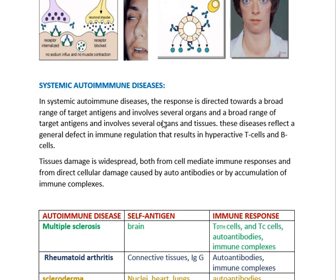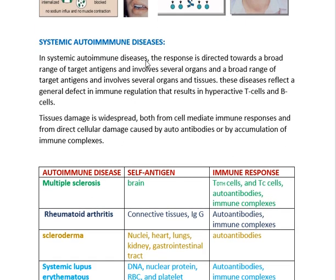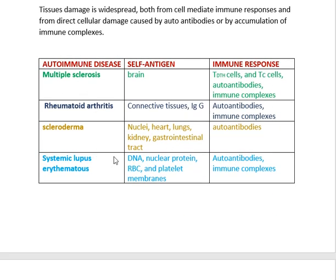Moving to systemic autoimmune diseases: in systemic autoimmune diseases, the response is directed towards a broad range of target antigens and involves several organs and a broad range of tissues. The whole system is damaged, which is why we call these systemic autoimmune diseases. Tissue damage is widespread, both from cell-mediated immune responses and from direct cellular damage caused by autoantibodies or accumulation of immune complexes.